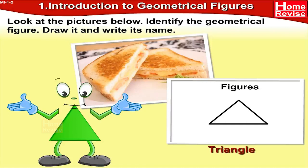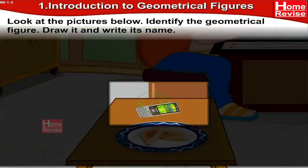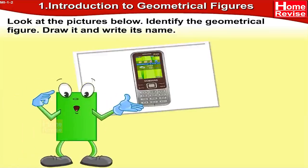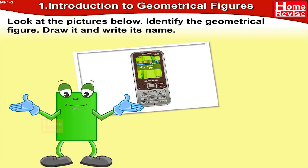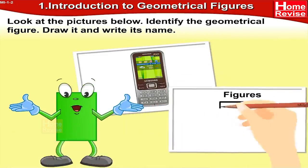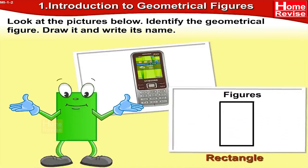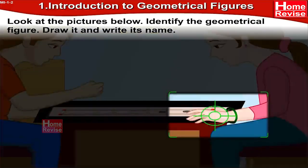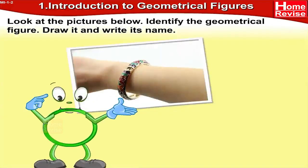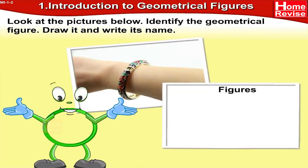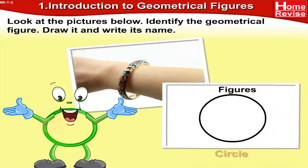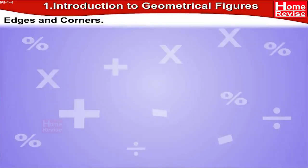This is a mobile phone. The figure of the mobile phone is like a rectangle, so draw a rectangle over here, which means the name of the figure is rectangle. Now that's a bangle — it has the shape of a circle, so draw a circle over here and write circle.